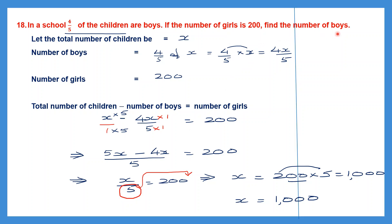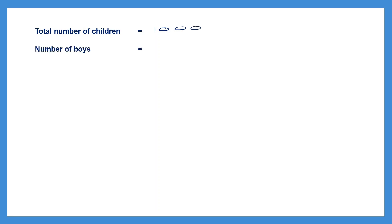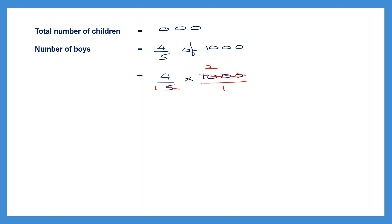Now we find the number of boys. Four-fifths of the children are boys, and we found 1000 total children. So the number of boys is 4/5 of 1000, which is 4/5 into 1000/1. Canceling: 5 twos are 10, so 1000 becomes 200. Then 4 times 200 equals 800. The number of boys is 800. We will stop here and continue with the remaining questions in our next video. Thank you, children.